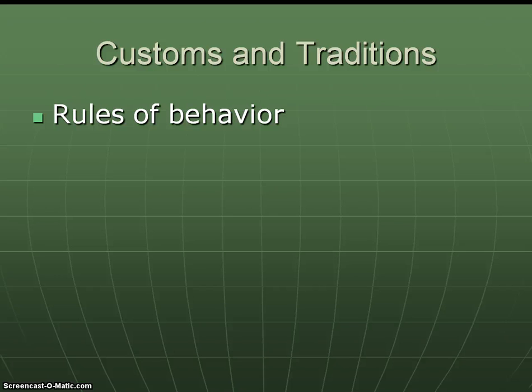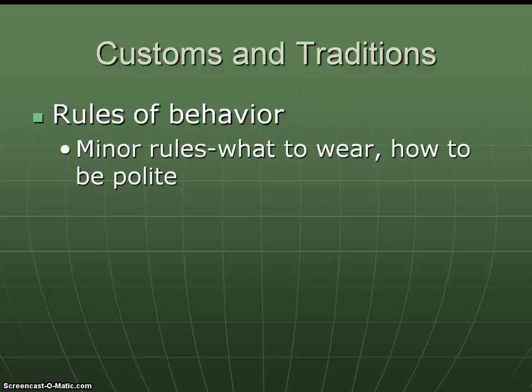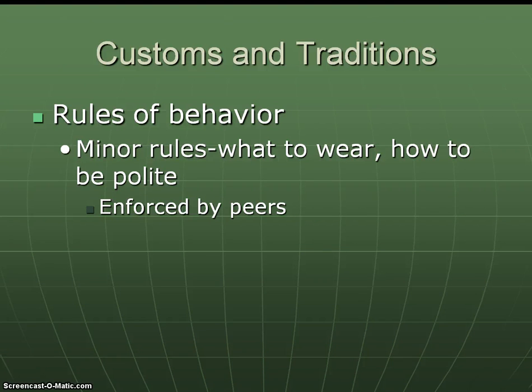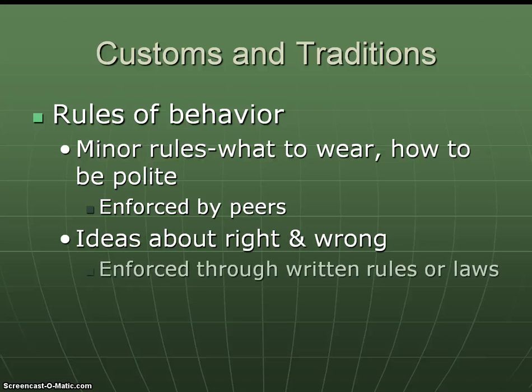The next element is customs and traditions. Customs and traditions are rules for behavior. There are major rules and minor rules. Minor rules include what to wear, how to be polite, how you eat — do you eat with forks or chopsticks? Do you greet friends with a handshake or a bow? These are enforced by your peers. For example, it's probably not appropriate for a young man to wear a prom dress to school, and this rule is enforced by peers who might make fun of you. Major rules are about right or wrong and are enforced through written rules and laws — for example, laws against killing or robbing a bank. There are examples of customs and traditions from around the world in terms of clothing and food on your paper.